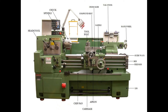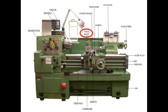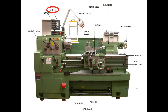A lathe machine tool consists of several parts like headstock, bed, tailstock, carriage, saddle, cross slide, compound rest, tool post, apron, lead screw, feed rod, chuck, main spindle and legs.